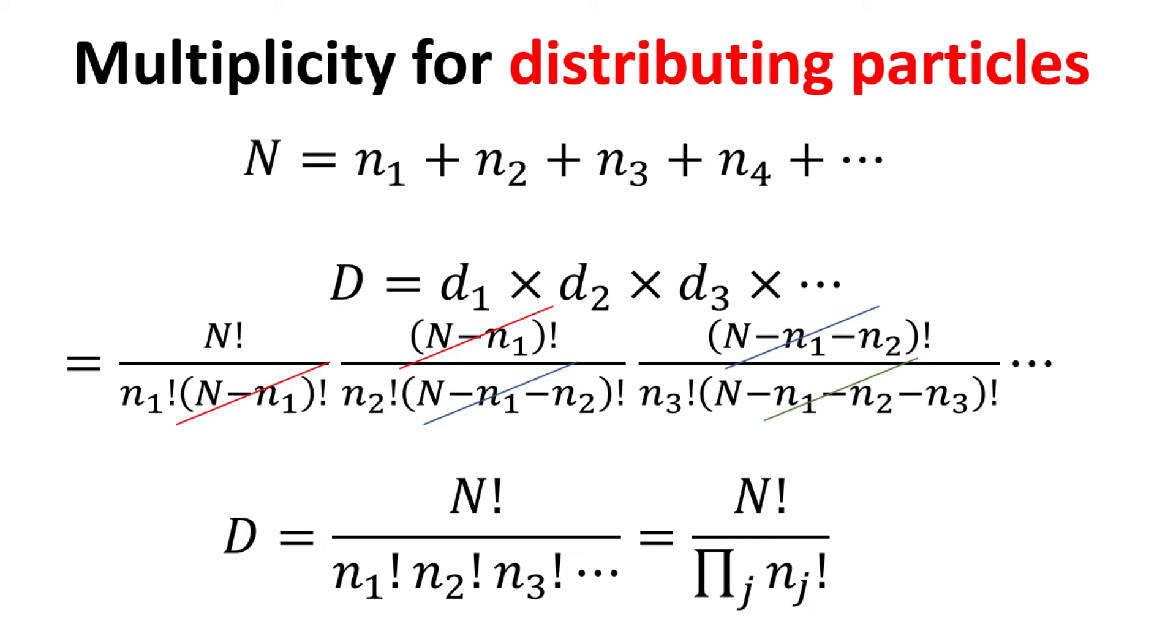Copying the expressions we worked out in the previous slide, we notice that the denominators of the prior d cancels with the numerator of the subsequent d. This allows us to arrive at a compact expression for d to be n factorial divided by the product of all nj factorial.